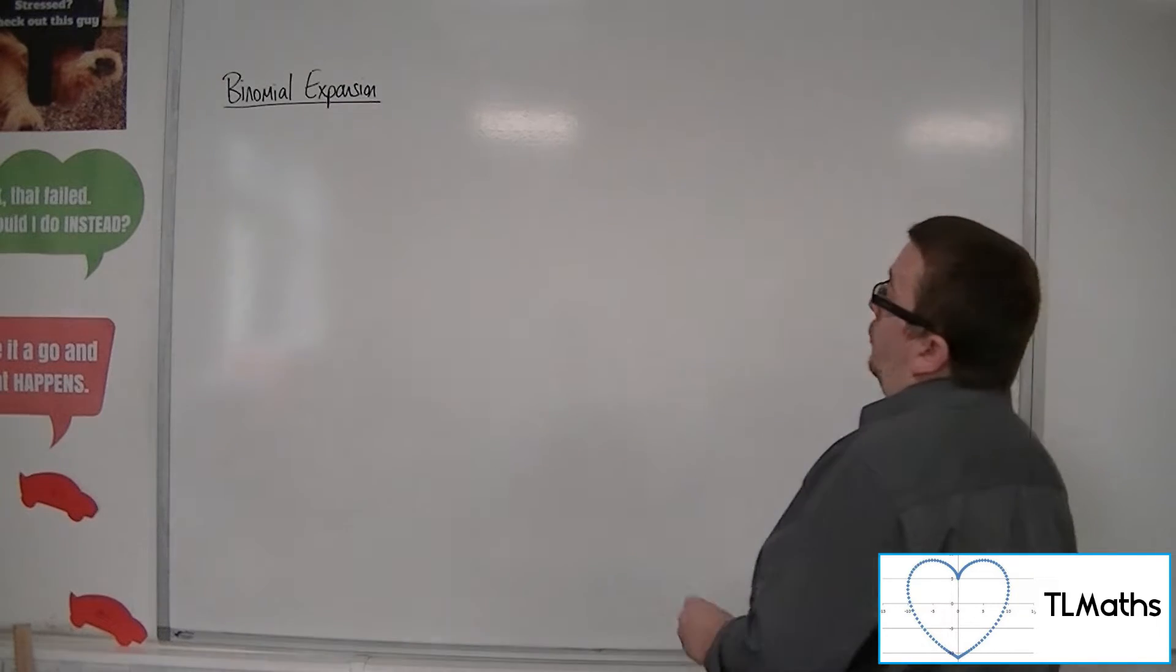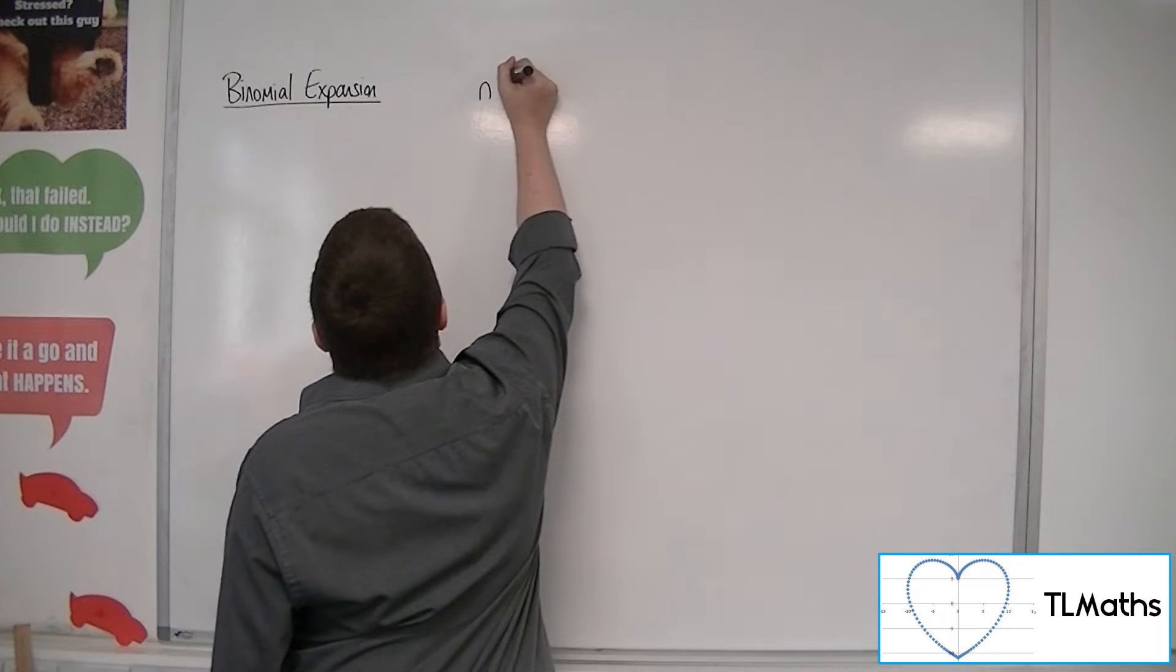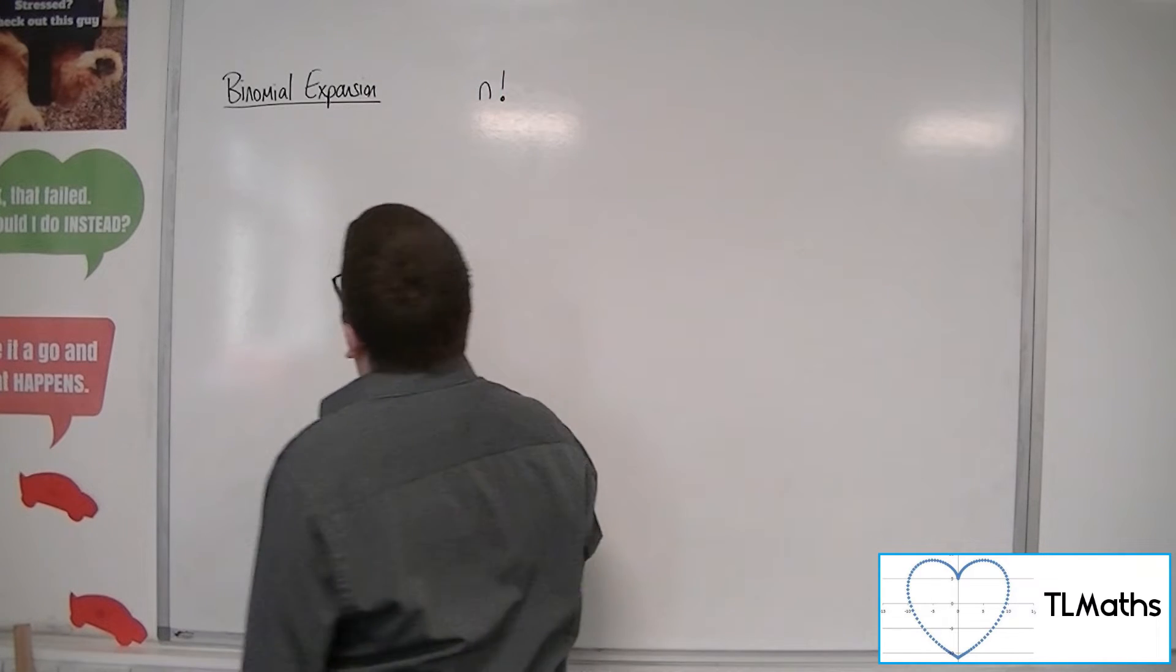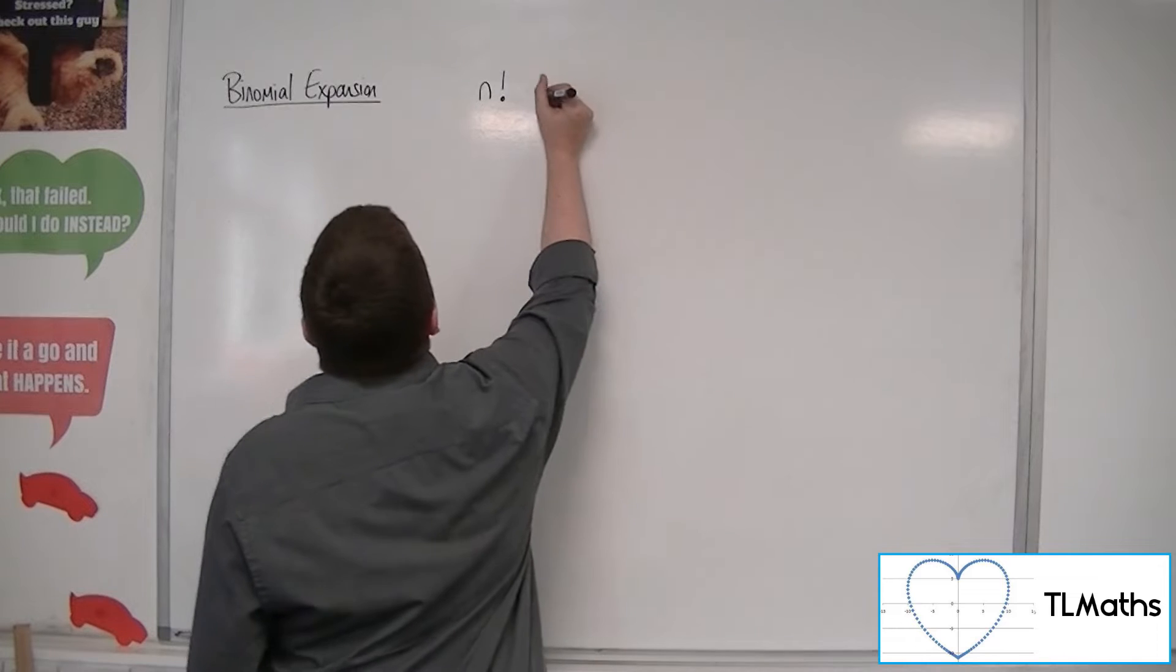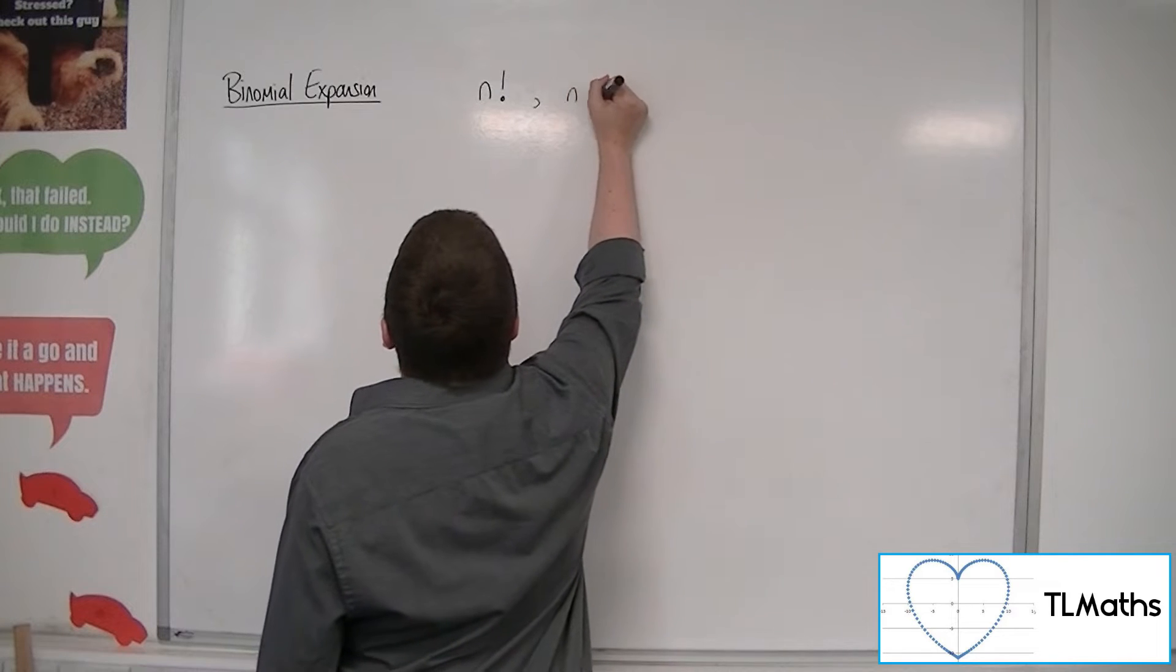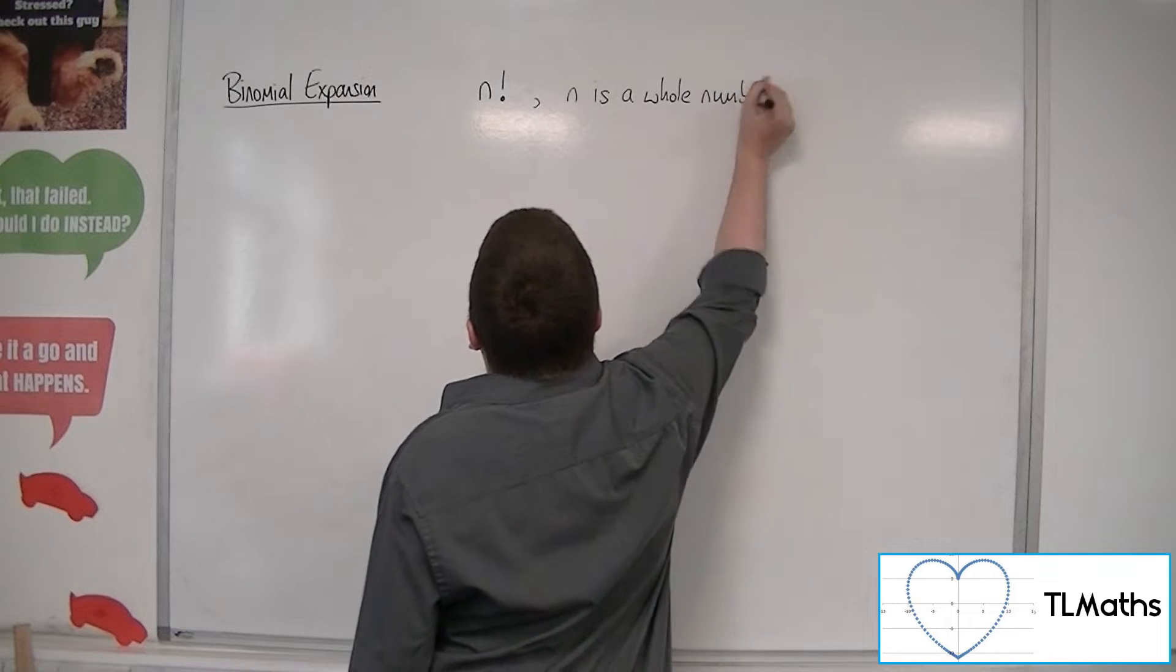So if you've never met it before, it's written as some number factorial, and n is an integer here. Well, n is a whole number.